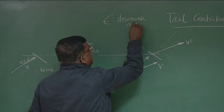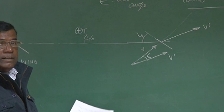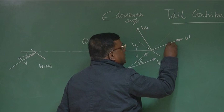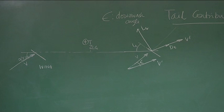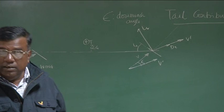The velocity vector is tilted by epsilon, which is called the downwash angle. Lift and drag are perpendicular to and along the velocity vector respectively. So lift on the tail will be perpendicular to V prime — the local velocity. It will not be perpendicular to the free stream direction V; it will be perpendicular to the local V, because that is what causes the dynamic pressure. That is the definition of lift.